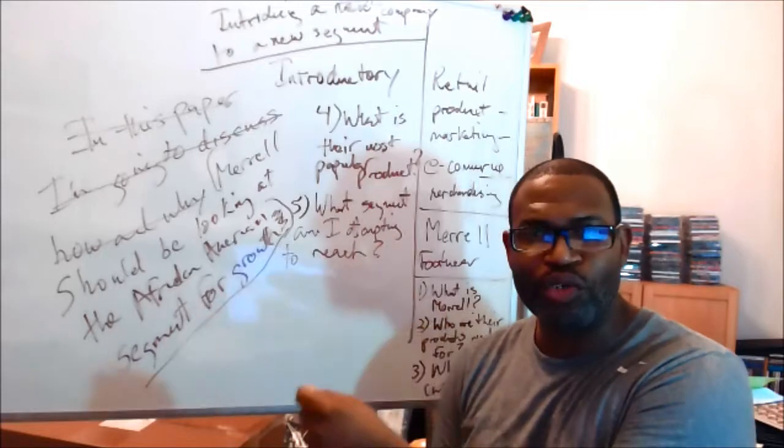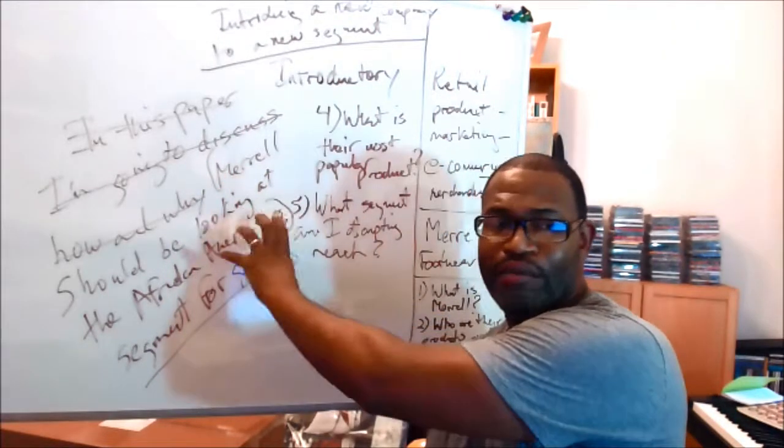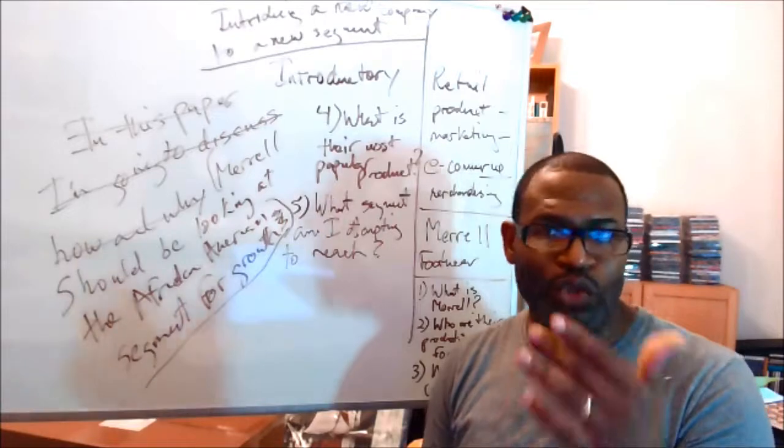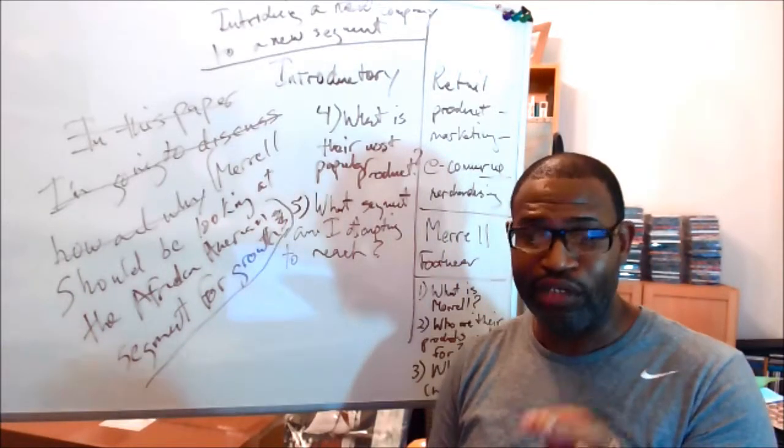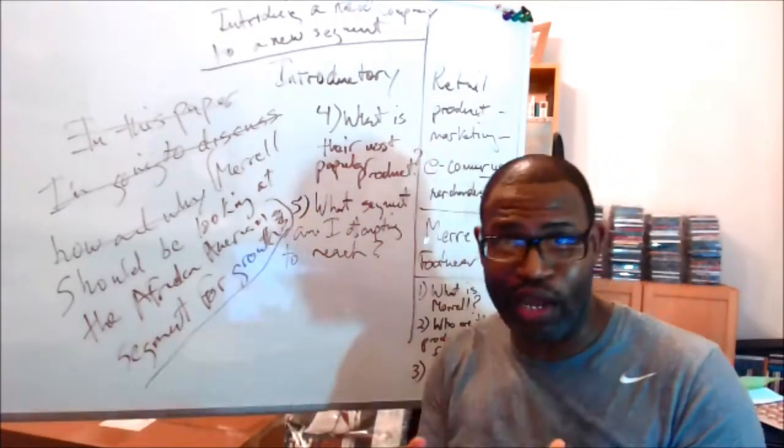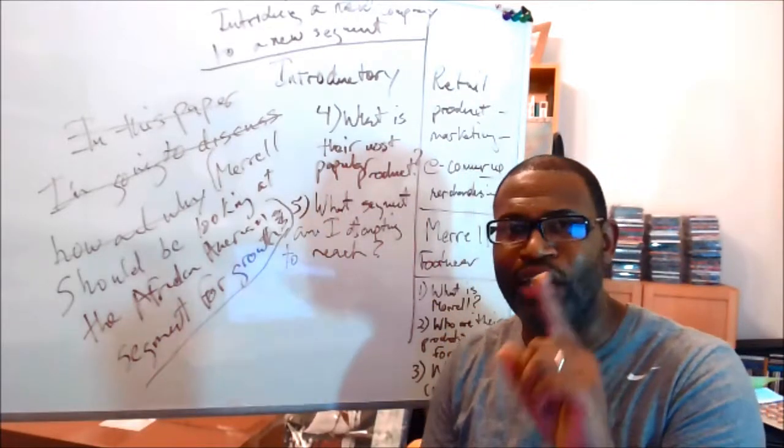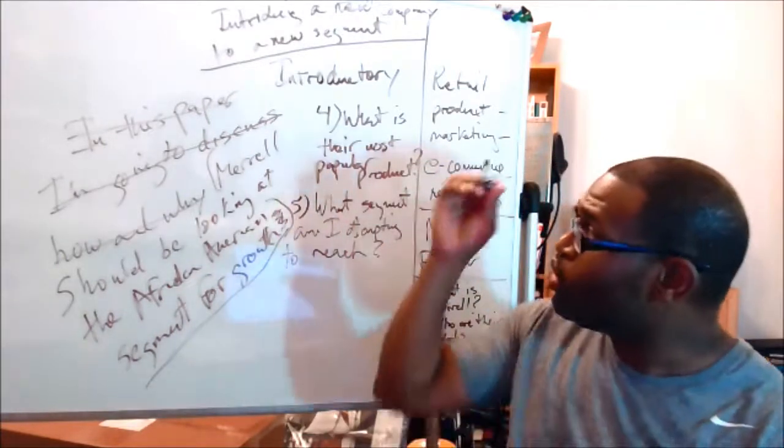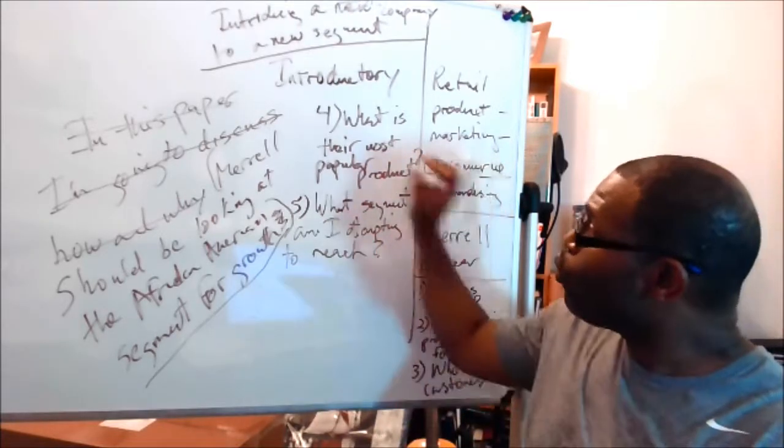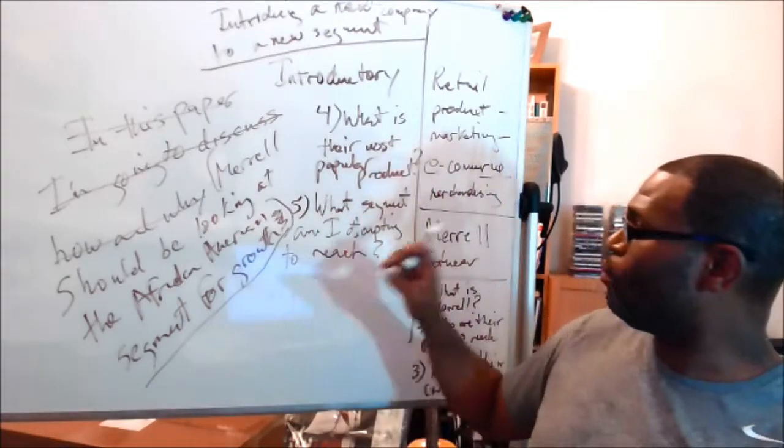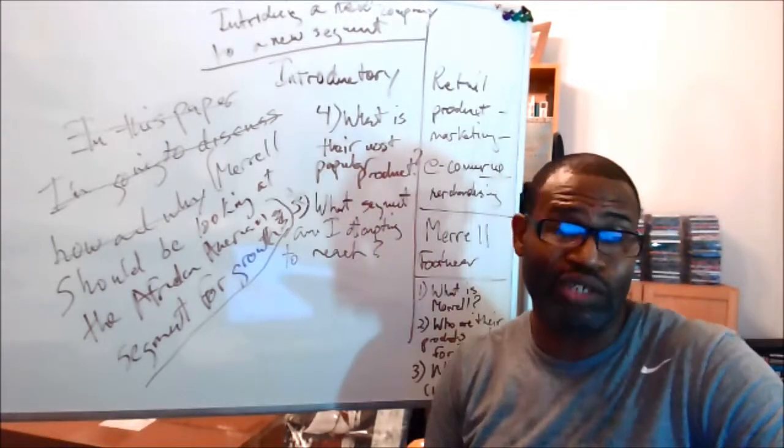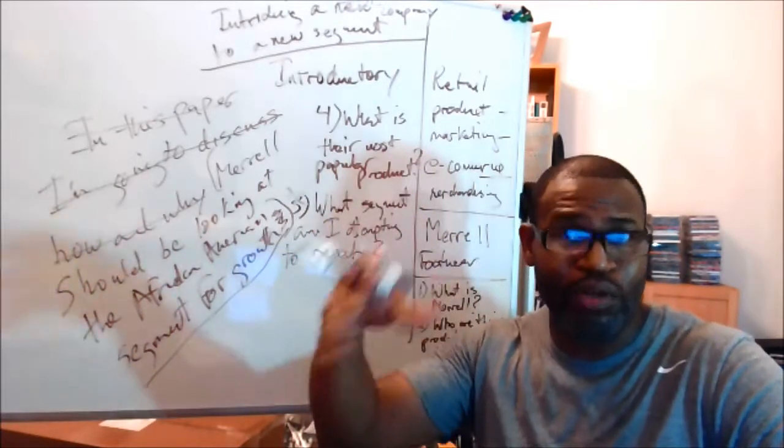Now as an introductory paper, you will not get into the meat of the paper, which is this part of it. You won't get into that aspect of it. But I don't know what Merrill is. When you write a paper, you write the paper as if that brand doesn't even know who they are. You're going to introduce this brand, give facts, be descriptive, be creative, and make it sound like that company is the best company in the world. So when I come back and I start looking at all these questions that I have—what is Merrill, who are the products made for, who is their customer, what is their most popular product, what segment am I attempting to reach—this question is one of the only ones that I don't think I'm going to end up using for my three-to-five paragraph paper.